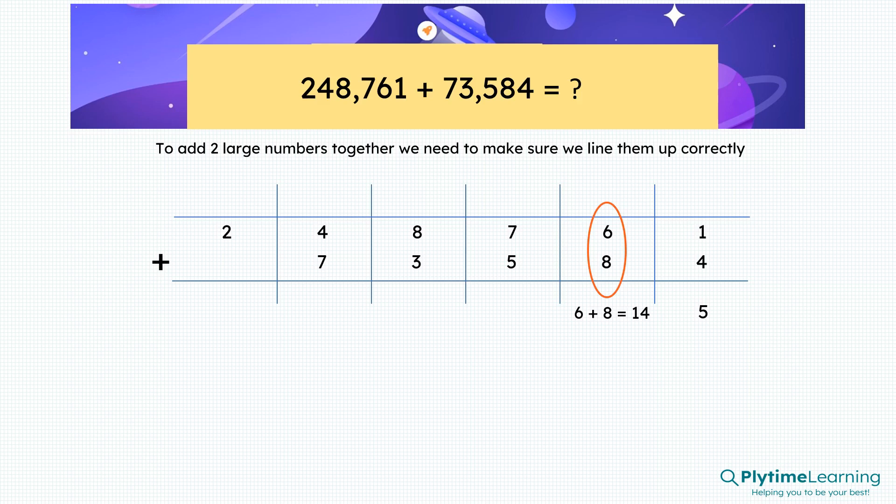Six plus eight is fourteen. It's the same as ten lots of ten, which is a hundred, plus four lots of ten. So we leave the four and we carry the one forward into the hundreds column.